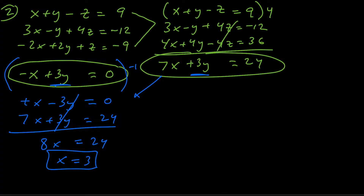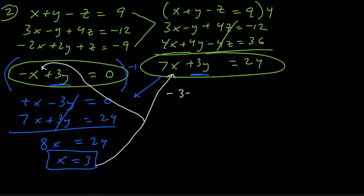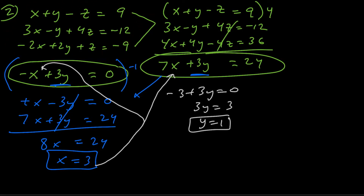We went from three variables and three equations, down to two variables and two equations, and now down to one variable and one equation. We take x equals 3 and plug it into one of the two-variable equations to solve for y. Using the left equation: negative 3 plus 3y equals 0. Adding 3 to both sides and dividing by 3, y equals 1.